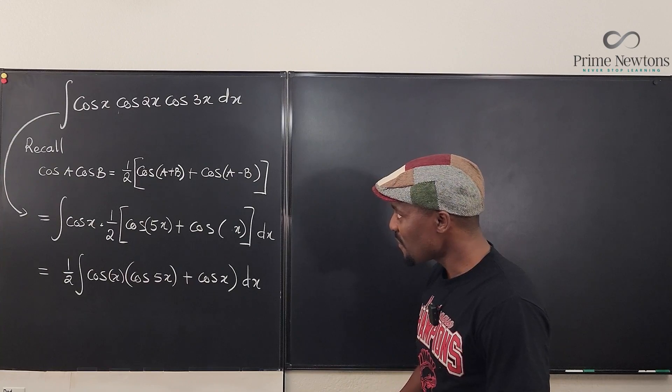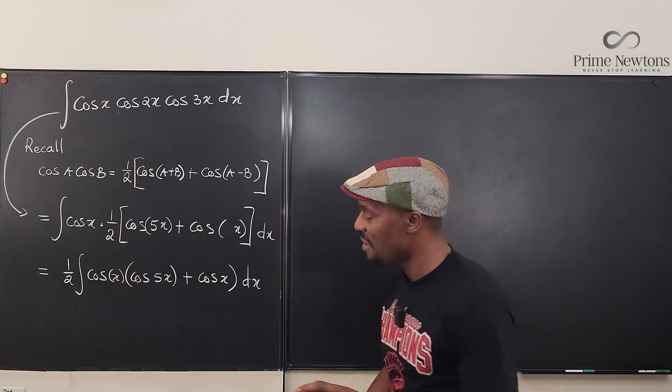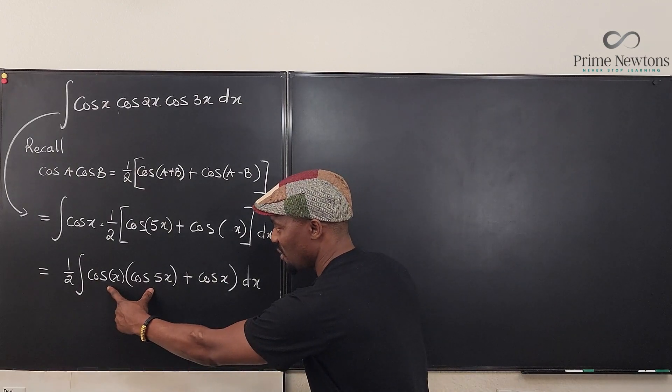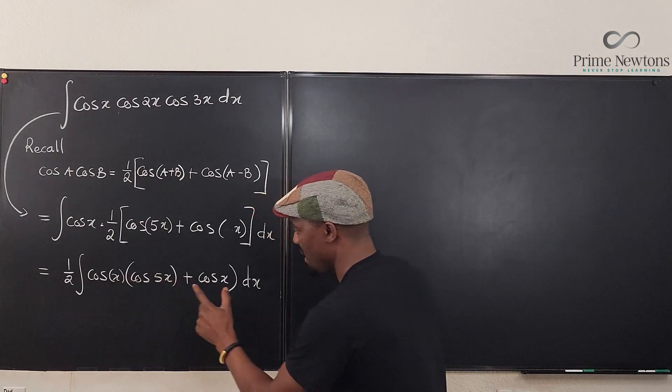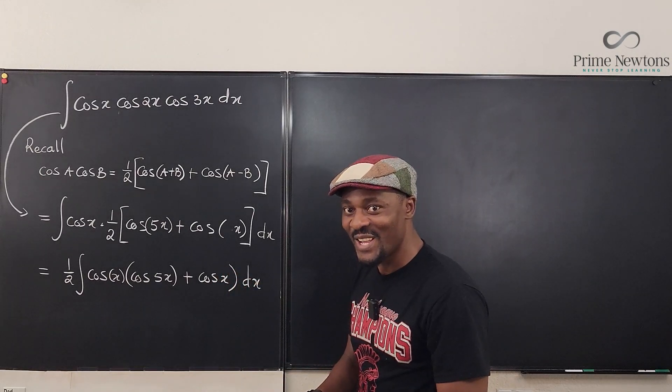So this is what we have now. Now see what has happened. What was a product of three functions has suddenly become a product of two functions because if I distribute cosine x, I have one term and I have one term. It's easier. Two is easier than three. So let's move on.